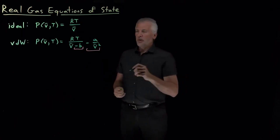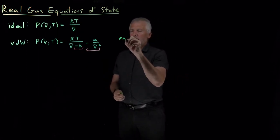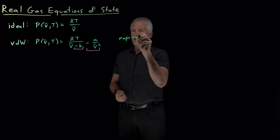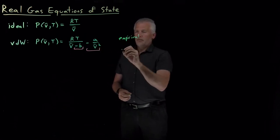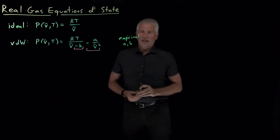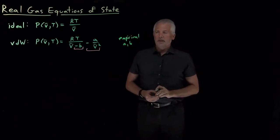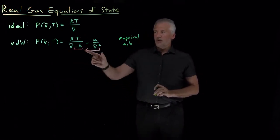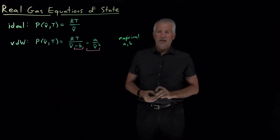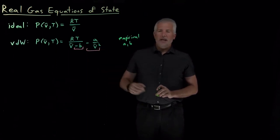Whereas the Van der Waals equation of state has these two empirical parameters, A and B. So we can't use the Van der Waals equation of state without knowing the values of A and B, and those usually come from having done some experiments on a particular gas to measure it.